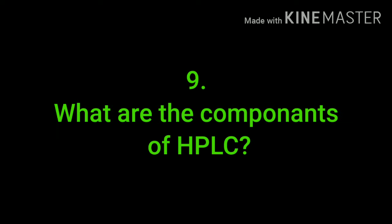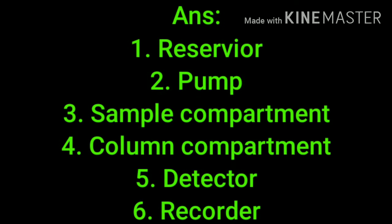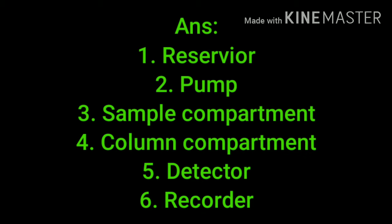What are the components of HPLC? There are six components: first is reservoir, second is pump, third is sample compartment, fourth is column compartment, fifth is detector, and sixth is recorder.